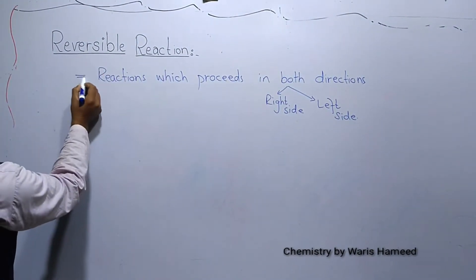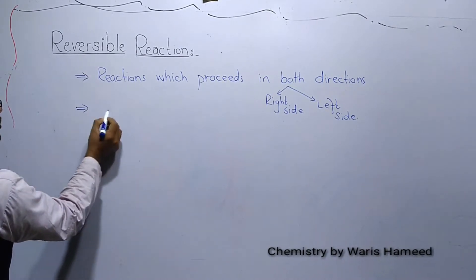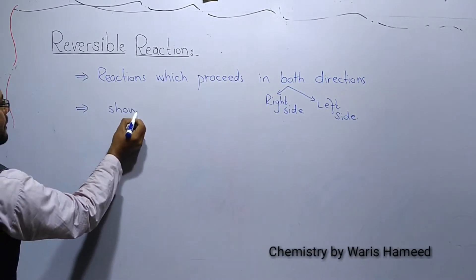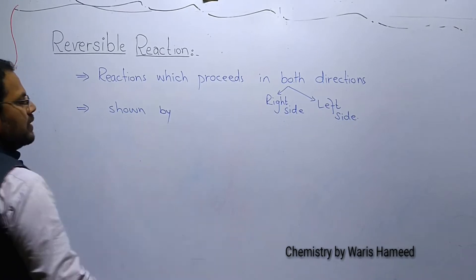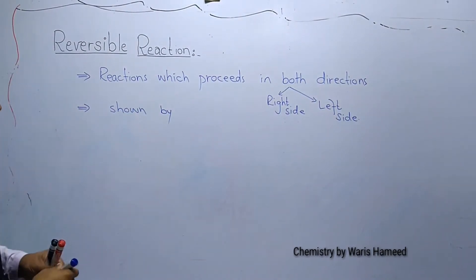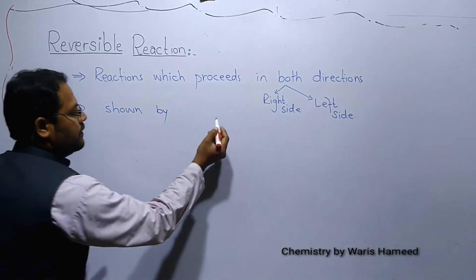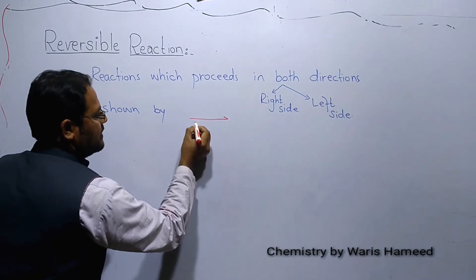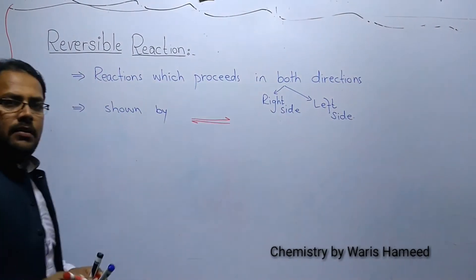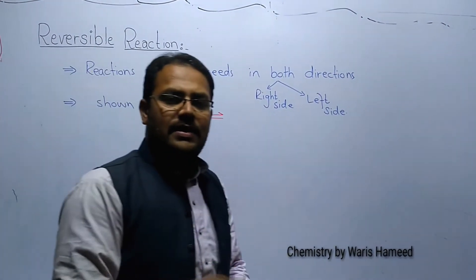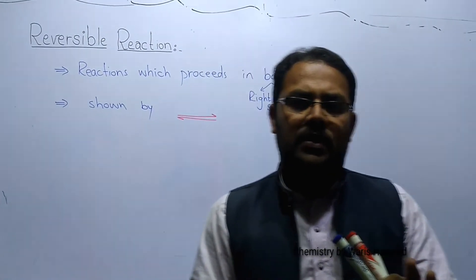These reactions are shown by a double-headed arrow, just like this. This arrow shows that the reaction will proceed in reverse direction as well as in forward direction.